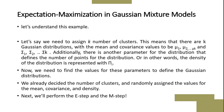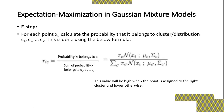We then perform the E-step and M-step. What is the formula for the E-step? For each point xi, calculate the probability that it belongs to cluster or distribution c1, c2, through ck. This is done using Bayes' formula: r_ic equals the probability of xi belonging to cluster c, divided by the sum of probabilities of xi belonging to all clusters x1 through xk.